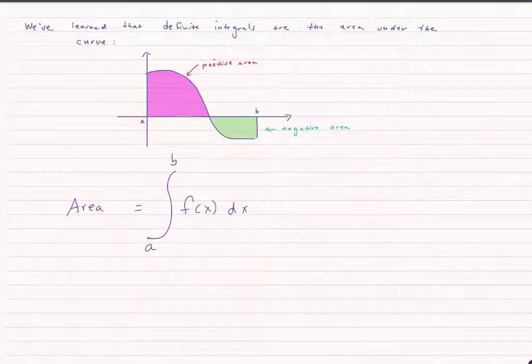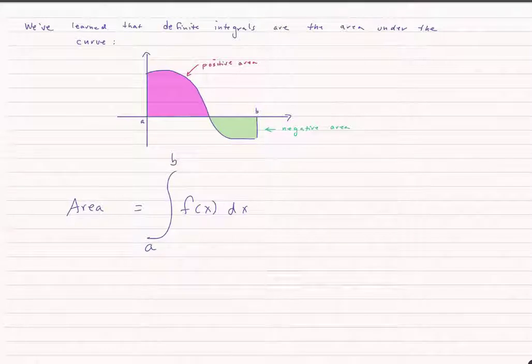Prior to this, we've talked about definite integrals as being area under the curve. We talked about that in terms of Riemann sums, how we could break that into little rectangles, and we let the number of rectangles approach an infinite amount, or the width of the rectangle approaching zero.